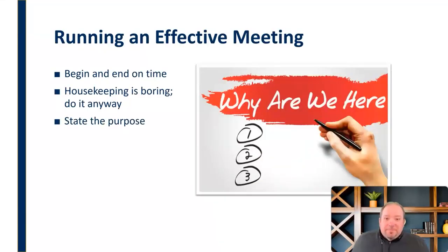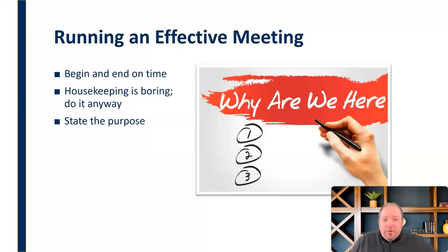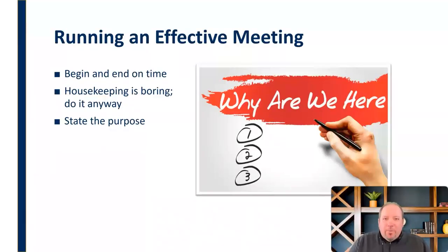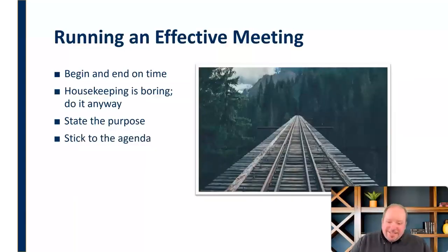You've got to state the purpose. One of the first things you've got to do when you open a meeting is say, this is what we're trying to accomplish. Let people know why they are there — even beforehand as you send out the invitation, people should know what this meeting is about and what you're trying to accomplish. You certainly want to state that at the start of the meeting. This is why we're here, and this is where our attention needs to be. Doing so will help you stick to the agenda.